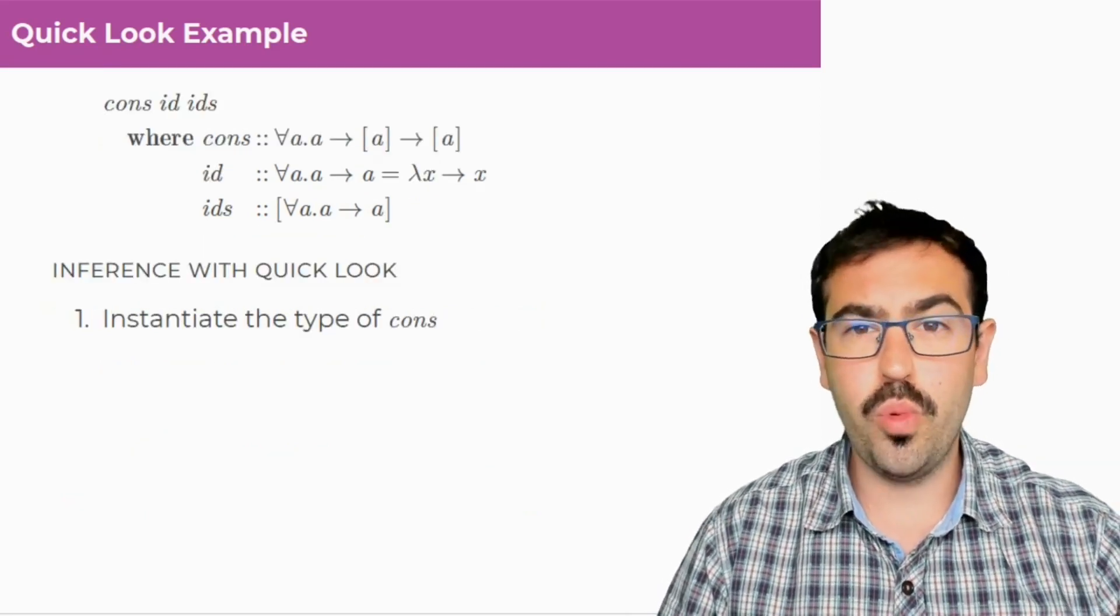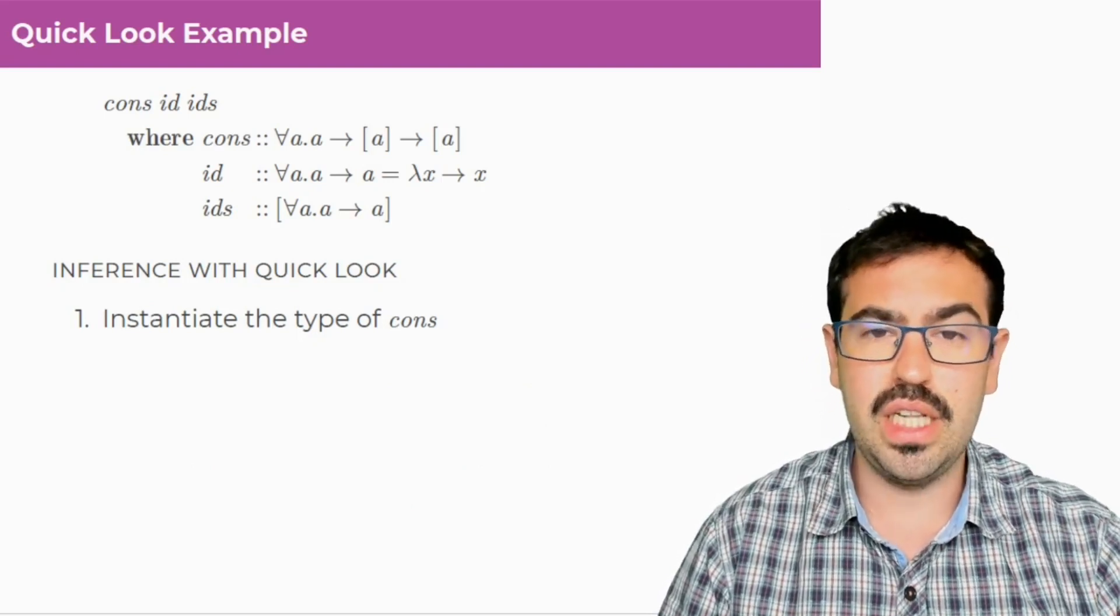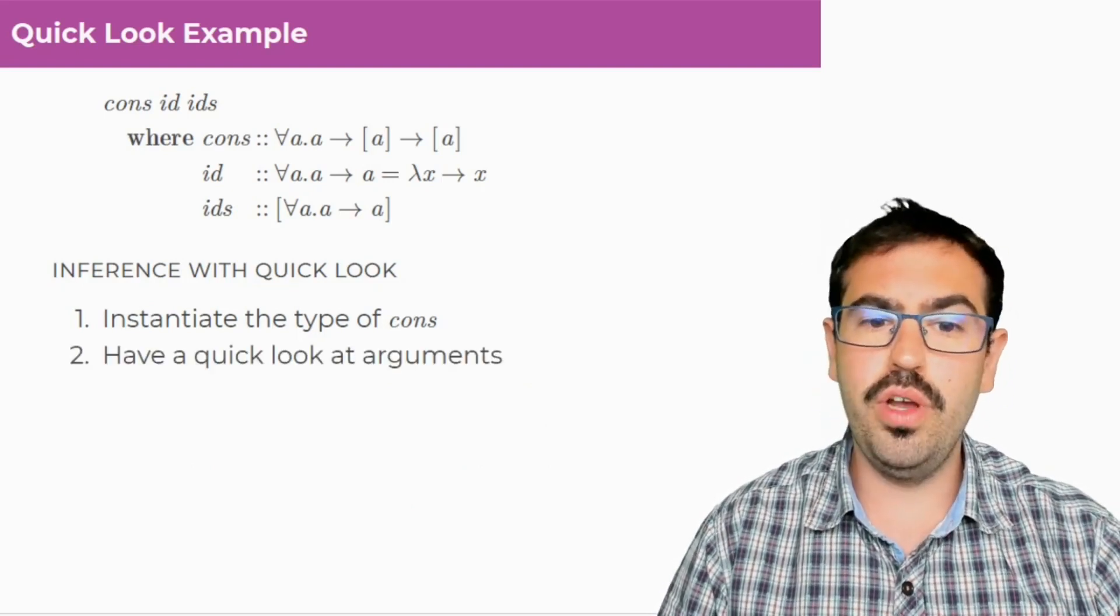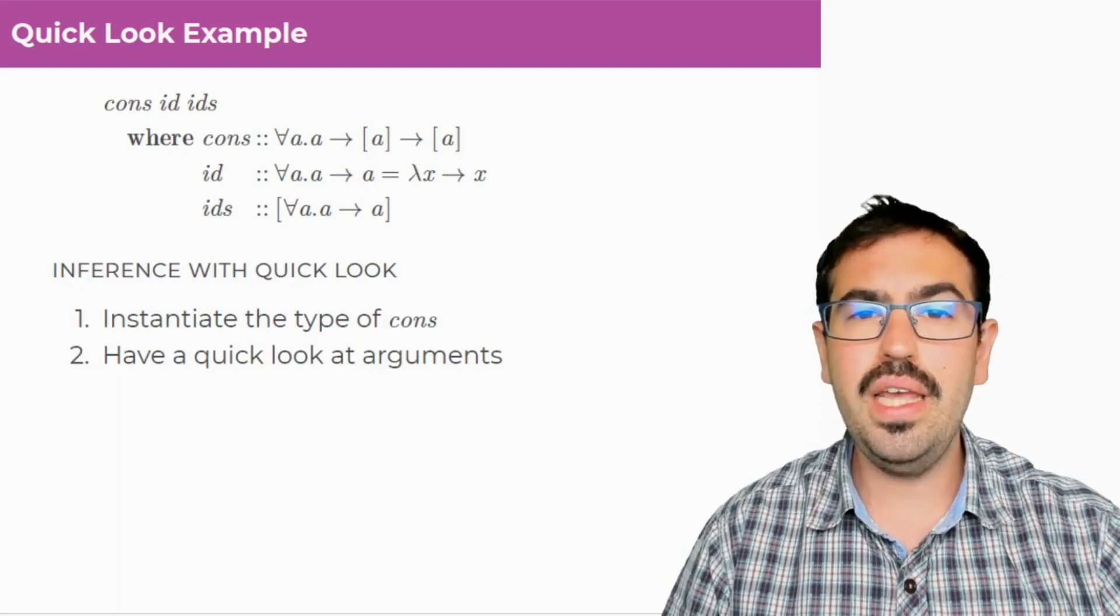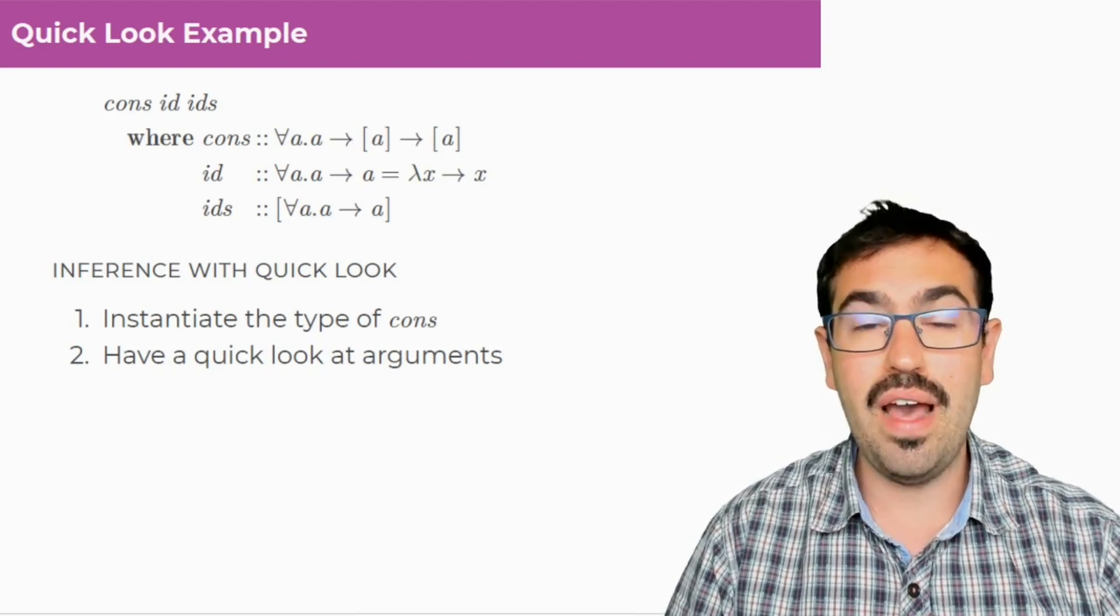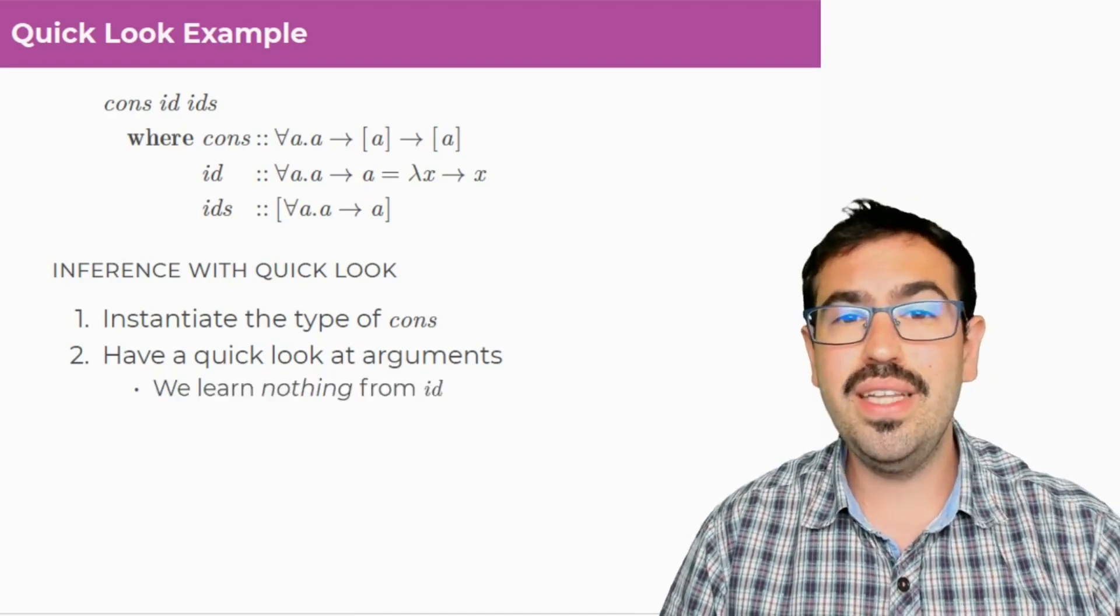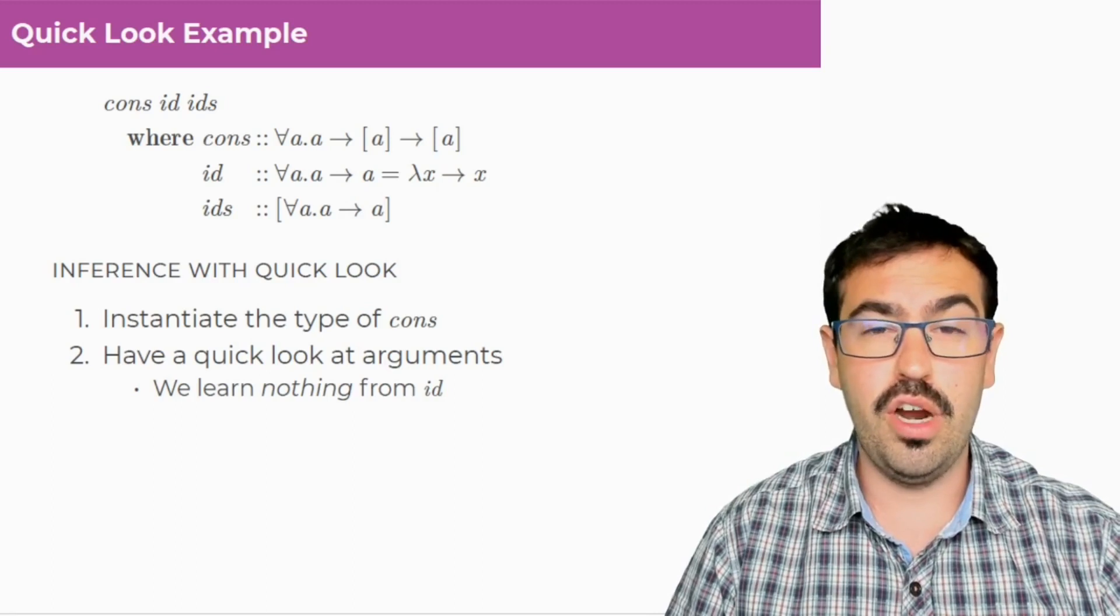How does it work with quick look? Well, you start with the same step, you instantiate the type of cons, and at this point you have a quick look at the arguments. You try to get as many information about the impredicativity you need by looking and having a peek at the arguments. In this case, we're going to learn nothing from the first argument ID, and from the second argument we're going to learn that alpha has to be exactly for all A dot A to A.